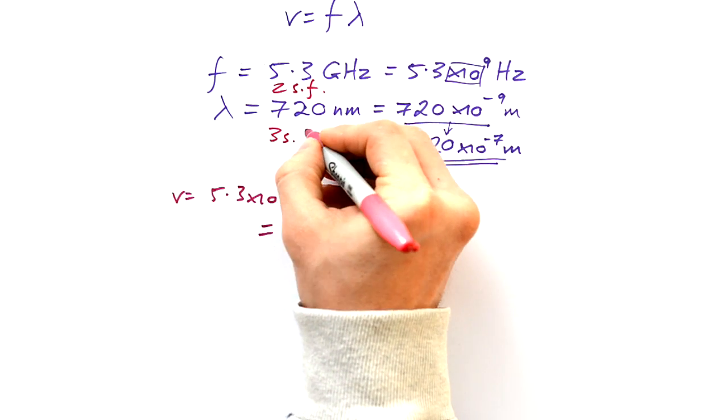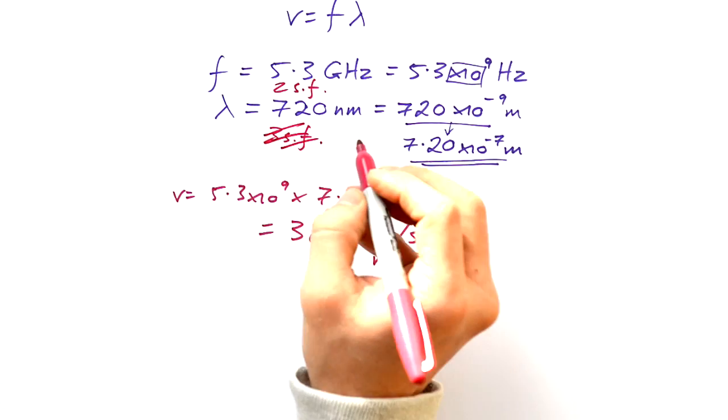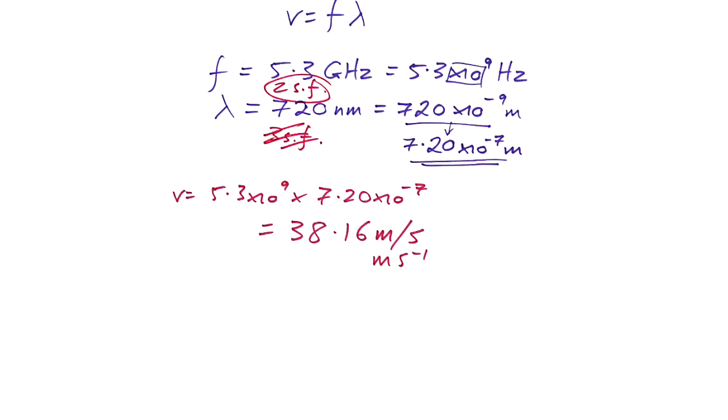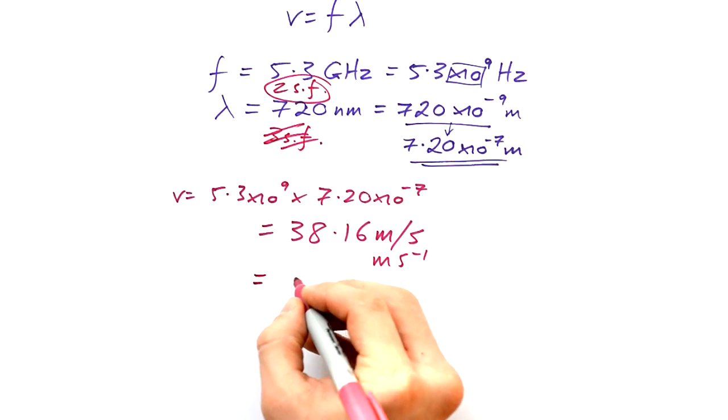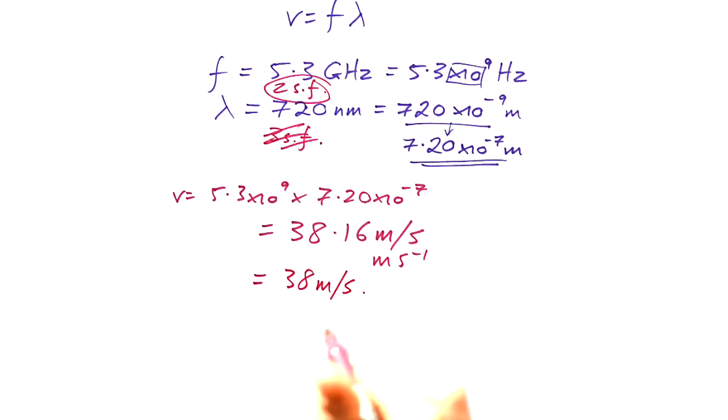So here we have two sig figs. Here we have three sig figs - it could be two, but I'm going to say it's three. So therefore I need to go to two significant figures. So 38.16, but if a question asks me to give my answer to an appropriate level of precision, I actually have to give that just to 38 meters per second. Now that is the correct precision.